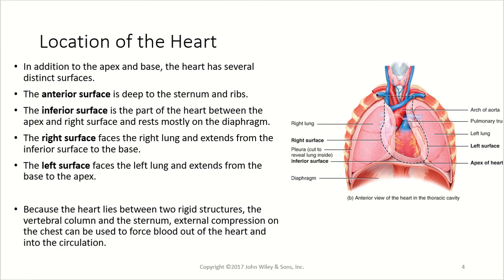Because the heart lies between two rigid structures — the ribs, sternum, and vertebral column — external compressions on the chest can be used to force blood out of the heart and into circulation. This is why CPR actually works and helps to pump blood when the heart is not pumping blood properly.